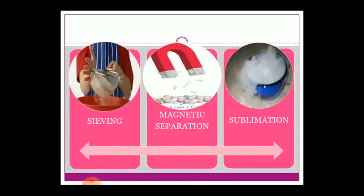Then we did sieving (chalni se chhaanna) — filtering through a sieve. Sieving can be used for solid with liquid or solid with solid. Then we have done magnetic separation. In magnetic separation, if there is any magnetic material like iron somewhere, we can separate it using magnetic separation.